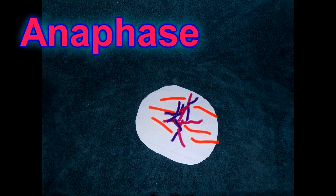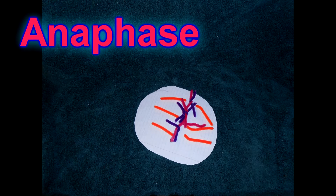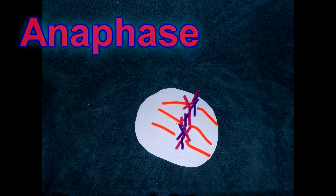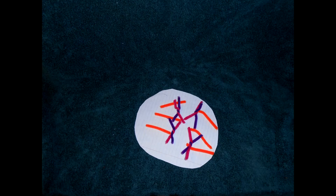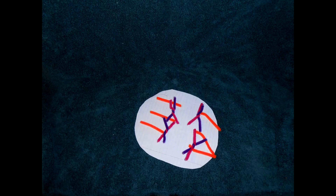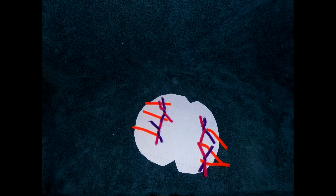Now we're on to anaphase. In anaphase you can see the spindle fibers appear in the cell and attach to the chromosomes and start to split up the chromosomes and pull them onto the ends of the cell.